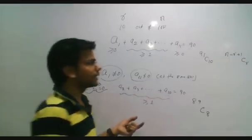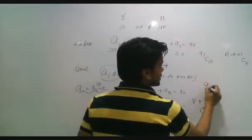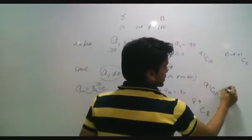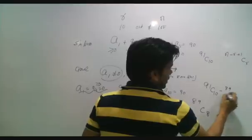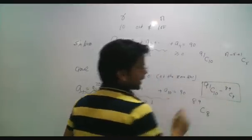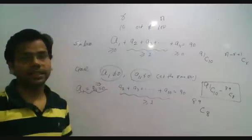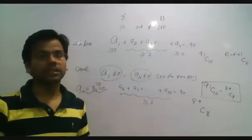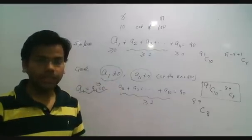So the required answer is 91C10 minus 89C8 if it is a circle.